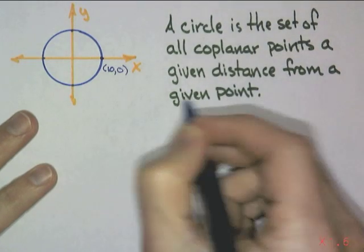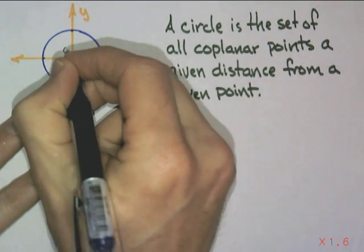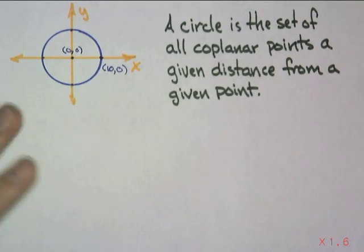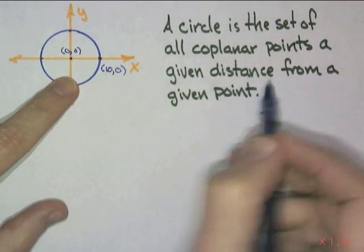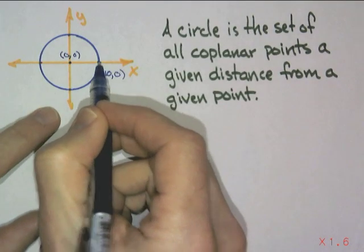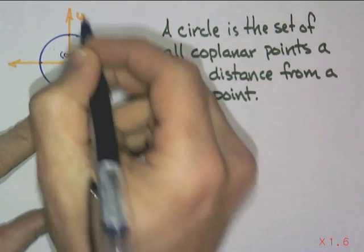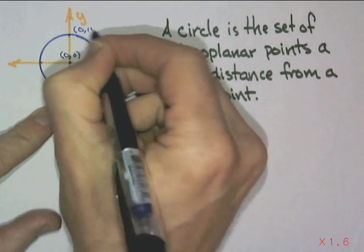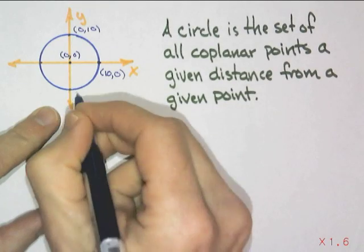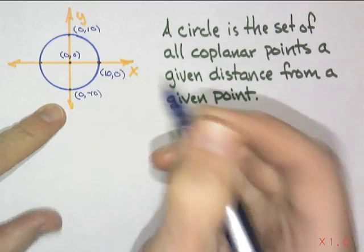So, the given point, that's our center. And in this case, our center is at (0,0), the origin. Our given distance is 10 because we know that that point is at (10,0). If it's 10 for the radius, this would be at (0,10). And this would be at (0,-10). Well, great.